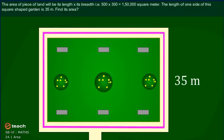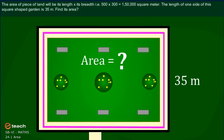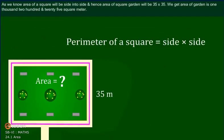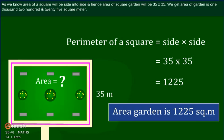The length of one side of this square shaped garden is 35 meter. Find its area. As we know, area of a square will be side × side. And hence, area of square garden will be 35 × 35. We get the area of garden is 1225 square meter.